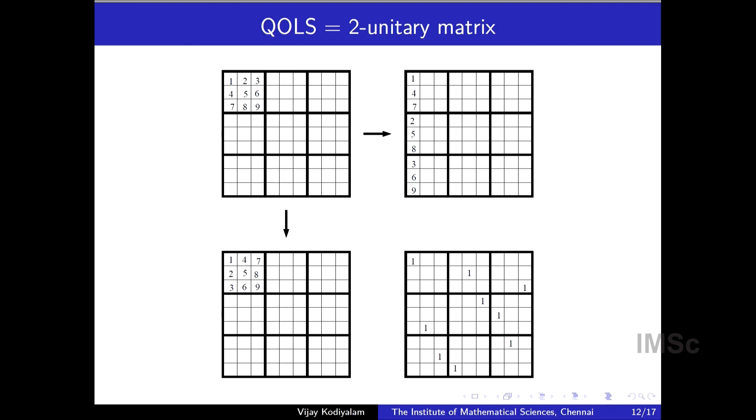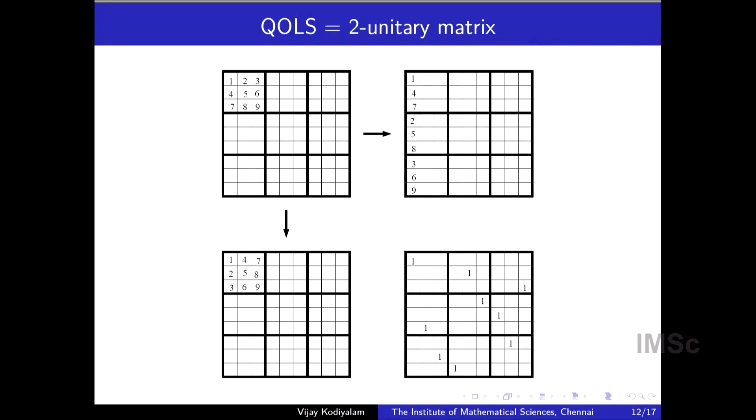And a two-unitary matrix is one which remains unitary after both these operations. After both these operations, it should be a unitary matrix. It should initially be a unitary matrix, should remain unitary after this and after this. So this here is an example of a two-unitary matrix. And this two-unitary matrix is in fact even better than just unitary. It's actually a permutation matrix. It can be shown that if you have a two-unitary matrix, which is a permutation matrix, that corresponds exactly to an orthogonal Latin square. And therefore, the quantization of an orthogonal Latin square, it makes sense to think of a general two-unitary matrix as a quantization of an orthogonal Latin square.